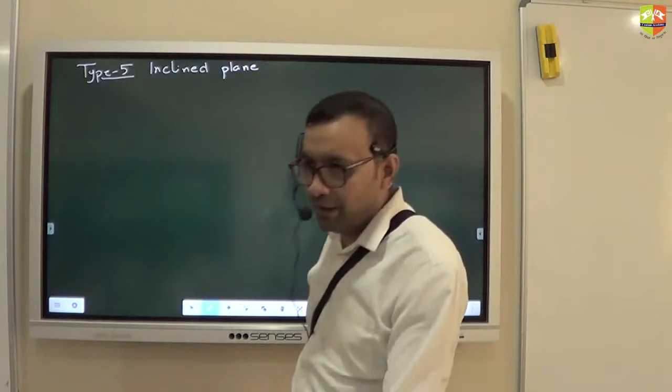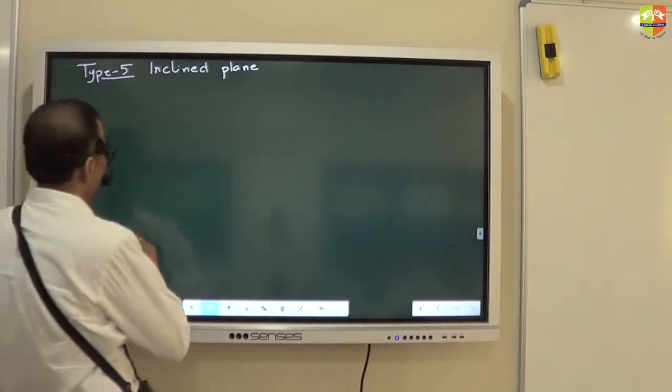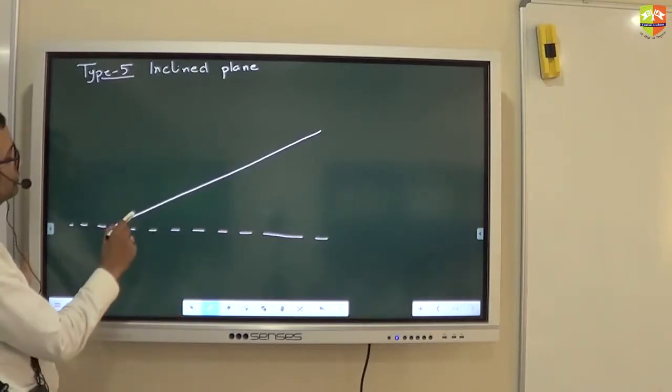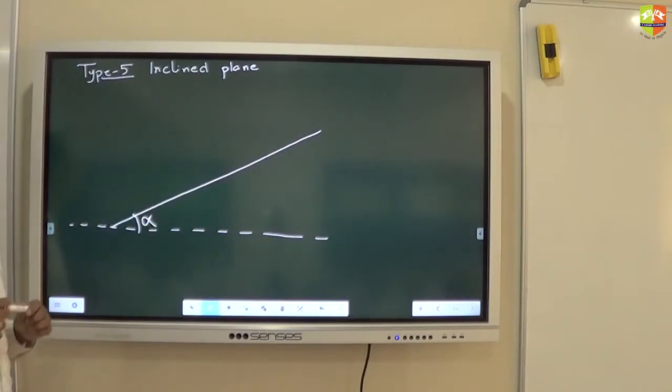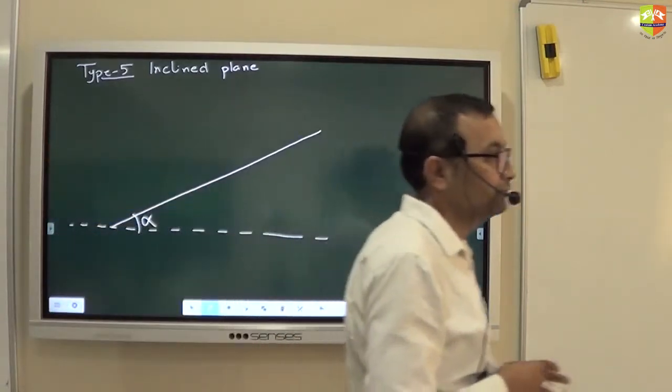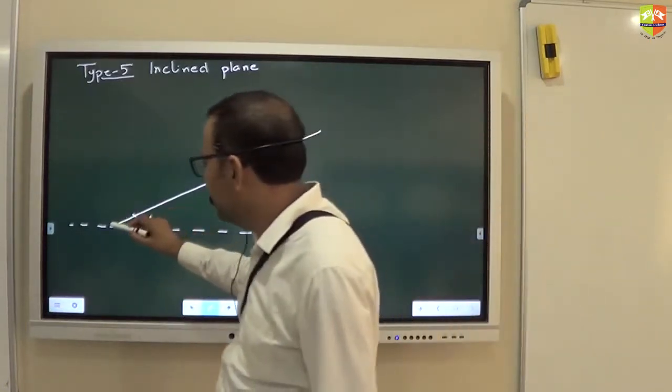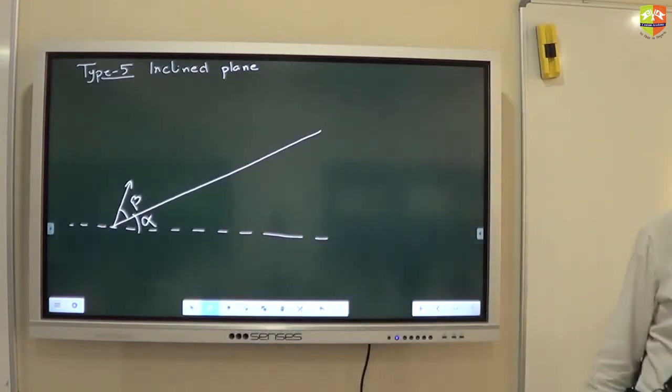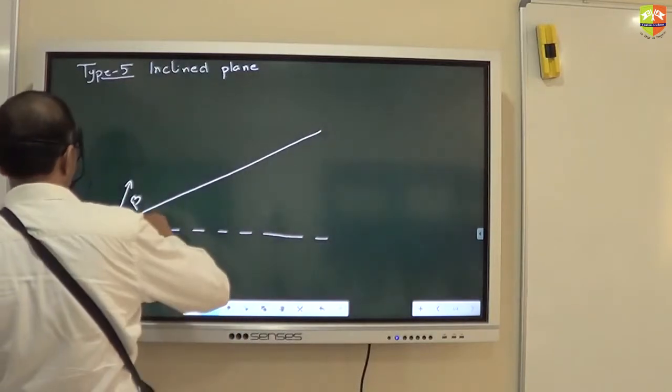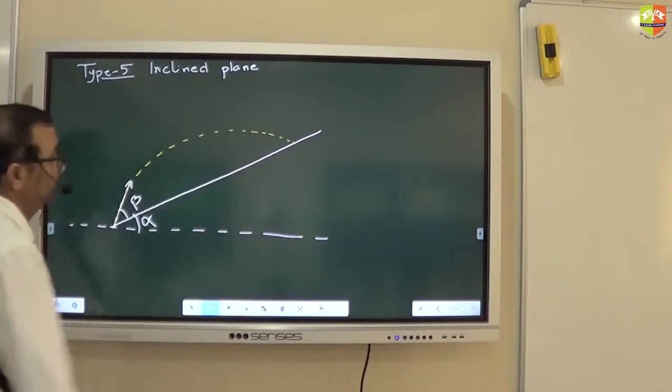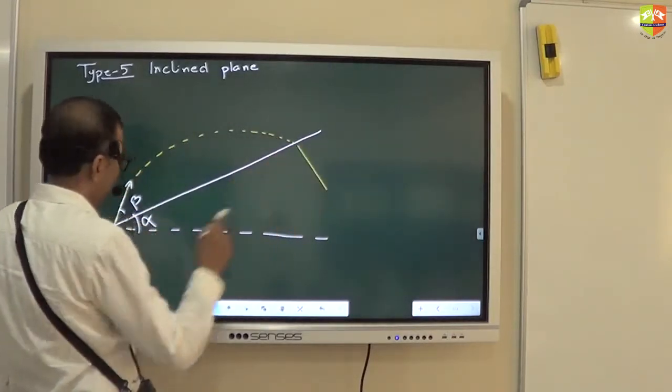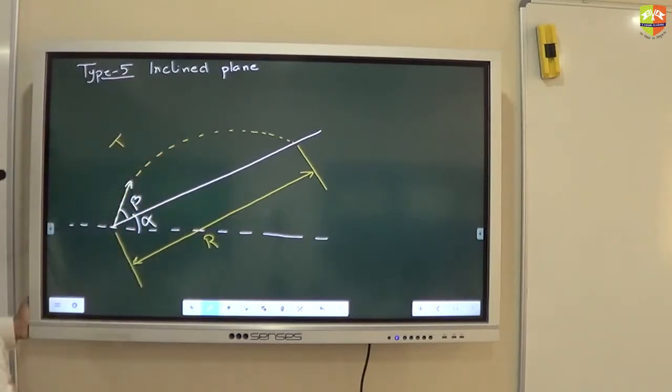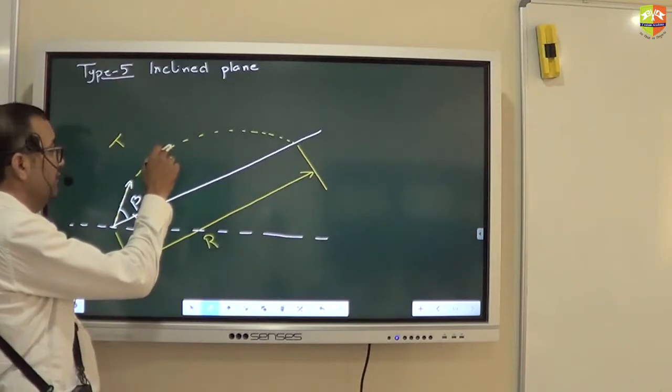The projectile on the inclined plane is what we are studying now. This angle is alpha, the angle of inclination. You are throwing a projectile like this, making angle beta with the inclined plane. This projectile hits the inclined plane here. You need to find the range of the projectile, time of flight, and the maximum height.